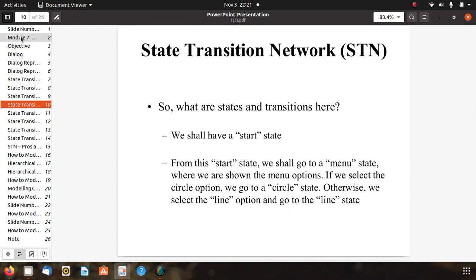We have to identify states and transitions. We shall have a start state, an initial state. From this start state we shall go to a new menu state where we are shown the menu options. If we select the circle option we go to the circle state, or we select the line option and go to the line state.